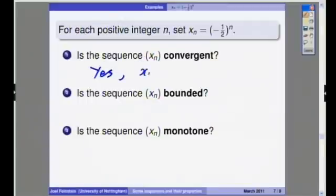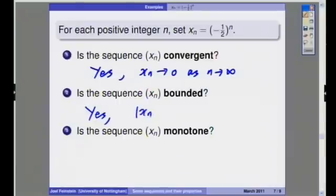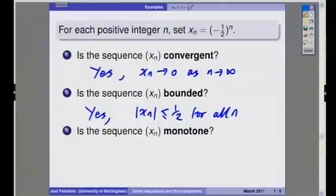So is the sequence xn convergent? Yes. And it converges to zero rather fast. Is the sequence bounded? Again, yes. And this time the modulus of xn is actually less or equal to a half for all n. Is the sequence monotone? No. We can see it's swapping from one side of the origin to the other. And so again, the terms will get bigger and then smaller and then bigger and then smaller. But it's not exactly the usual kind of oscillation because it is a convergent sequence.